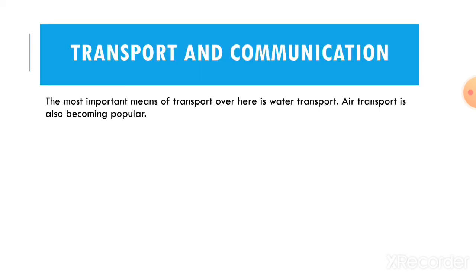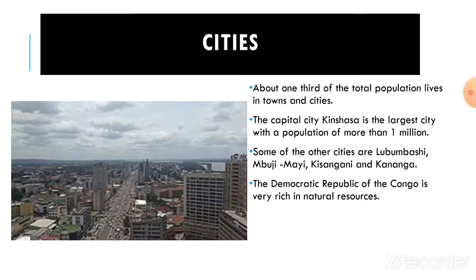Transport and communication: The most important means of transport here is water transport. Air transport is also becoming popular nowadays. Cities: About one-third of the population live in towns and cities. The capital city, Kinshasa, is the largest city with a population of more than one million. Some of the other cities are Lubumbashi, Mbuji-Mayi, Kisangani, and Kananga.